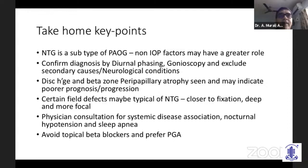To summarize: NTG is a subtype of open-angle glaucoma where non-IOP factors play a greater role. Confirm the diagnosis by diurnal phasing, gonioscopy, and exclusion of secondary causes. Do not miss neurological conditions that can mimic NTG. Disc hemorrhage and beta-zone peripapillary atrophy indicate poor prognosis and progression. Field defects closer to fixation are typical. Refer every NTG patient to a physician for systemic associations — nocturnal hypotension and sleep apnea. Avoid topical beta blockers and prefer a prostaglandin analog. Thank you.